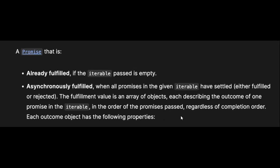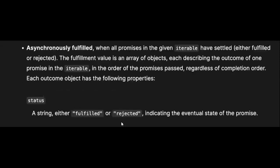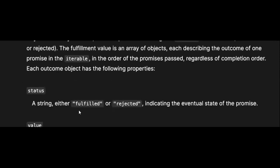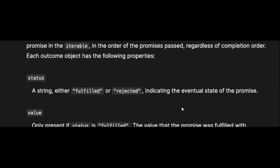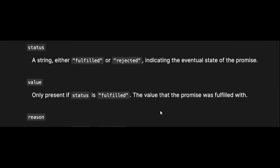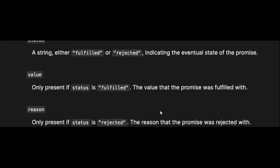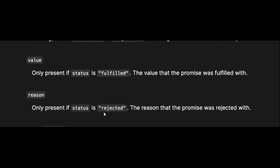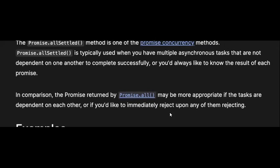The fulfillment value is an array of objects, each describing the outcome of one promise in the order of promises passed regardless of completion order. Each outcome object has the following properties: a status listing either 'fulfilled' or 'rejected' indicating the eventual state of the promise, and a value only present if status is fulfilled.